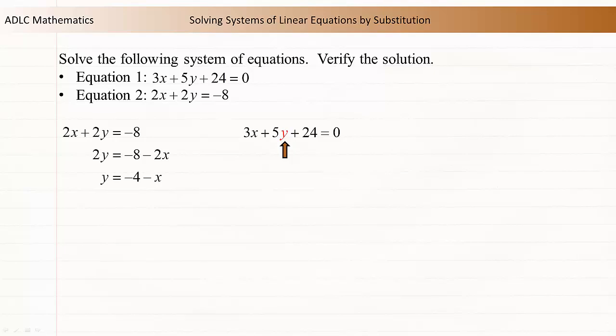Equation 1 includes a y, so we're going to replace this y with the equivalent expression -4 - x. Here's the equation after the substitution. Notice that the new equation has only a single variable, x. This means we can solve for x.